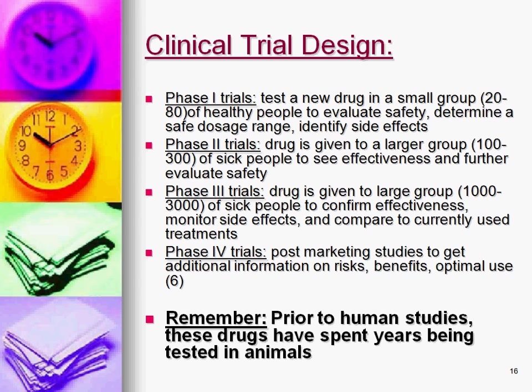If it's found that it actually works, then it moves to phase three trials. This is a much larger group, 1,000 to 3,000 people, who almost always have the disease. This helps to confirm effectiveness, monitor side effects, and do head-to-head studies of currently used treatments for the same condition — to see how they stack up.